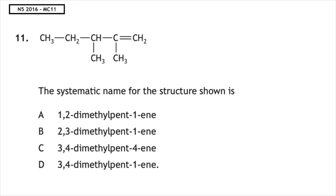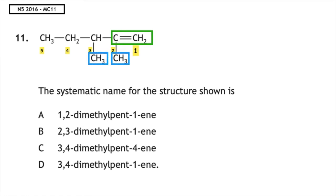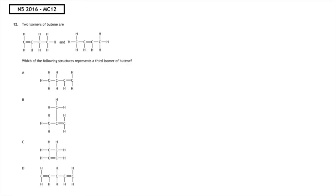This past paper question is from National 5, 2016, multiple choice 11. The systematic name for the structure shown is asked. The first thing we do is look for the longest carbon chain including the carbon-to-carbon double bond. We number these 1 to 5 and 1 to 5 backwards, and put a box around the carbon-to-carbon double bond. The lowest position that the double bond can be on is position one, so the end of the name would be pent-1-ene. The branches are on positions two and three, so the correct answer is multiple choice B: 2,3-dimethyl-pent-1-ene.